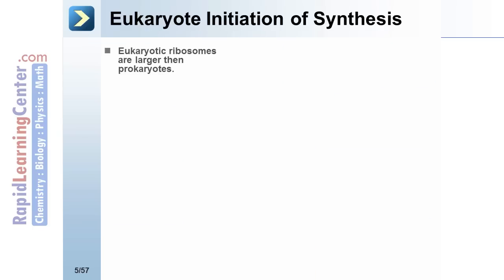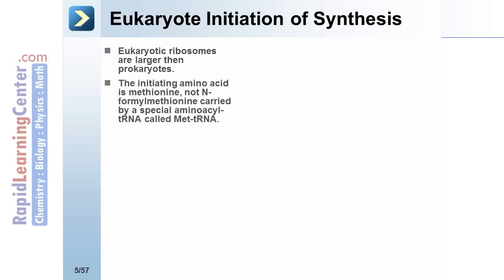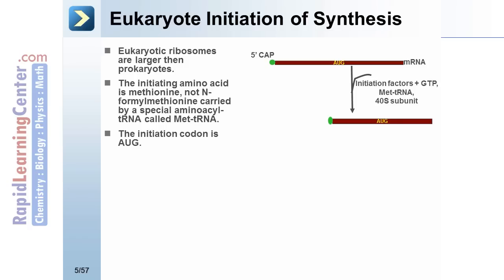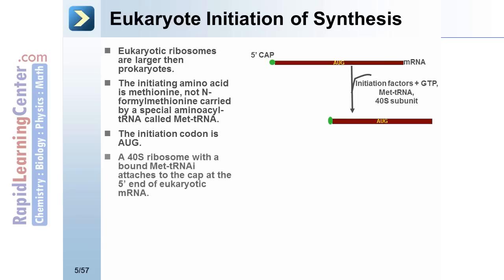Eukaryotic initiation of synthesis. Eukaryotic ribosomes are larger than prokaryotes. The initiating amino acid is methionine — not N-formyl methionine — carried by a special aminoacyl tRNA called met-tRNA. Here we see the 5' cap on the mRNA. Initiation factors plus GTP plus met-tRNA associate with the AUG initiation codon. A 40S ribosome with a bound met-tRNAI attaches to the cap at the 5' end of the eukaryotic mRNA. The 40S subunit with initiation components binds to this cap.